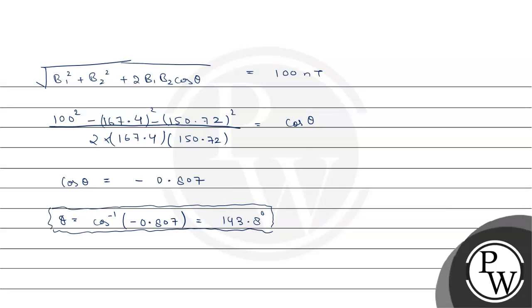This is our solution. Let's highlight it here. So now the second loop must be rotated through this angle to get the net magnetic field at the center of the two loops to be equal to 100 nanotesla. I hope you understood it well. Thank you.